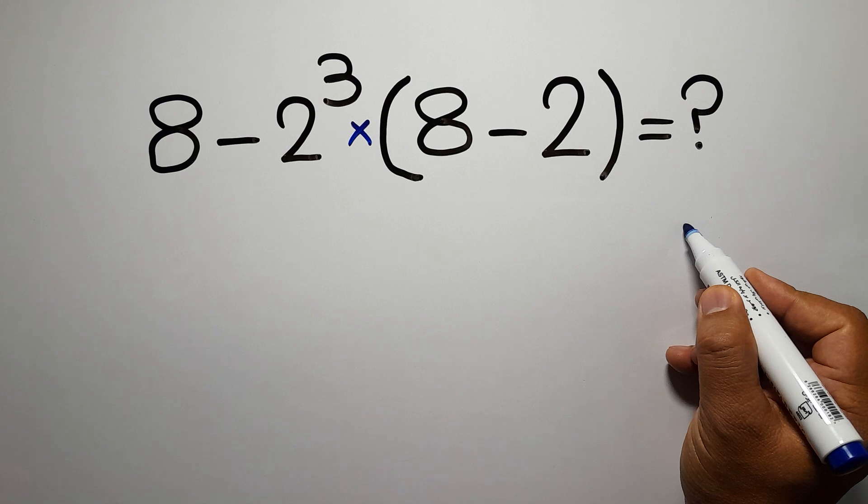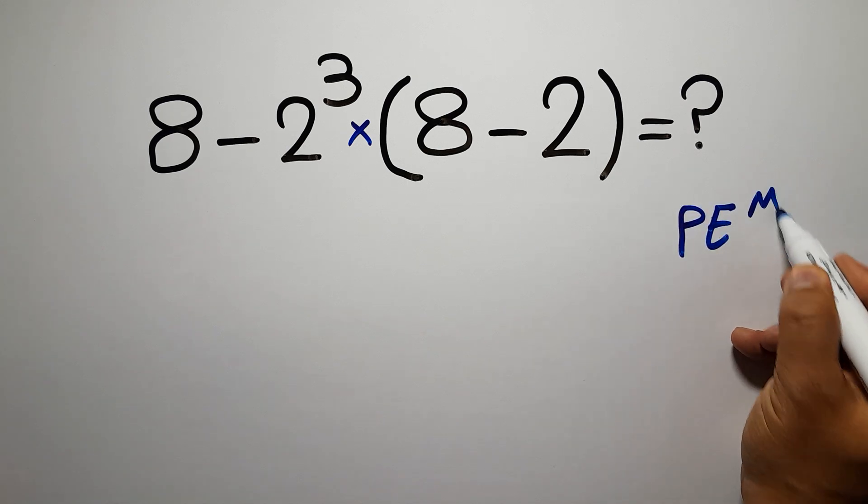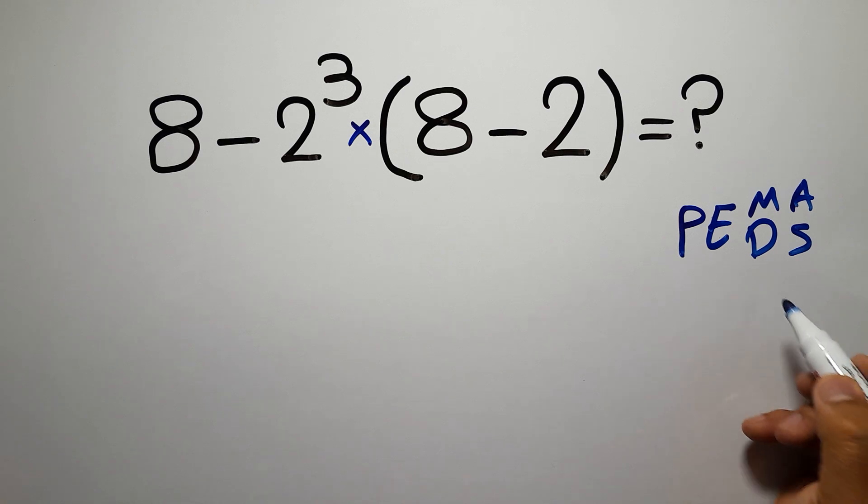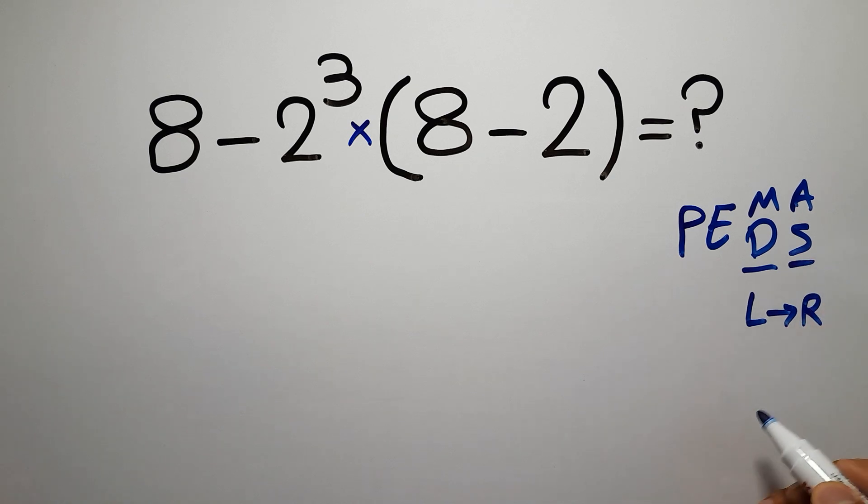first we have to do parentheses, then exponents, then multiplication or division and finally addition or subtraction. Remember that multiplication and division have equal priority and we have to work from left to right and the same applies to addition and subtraction.